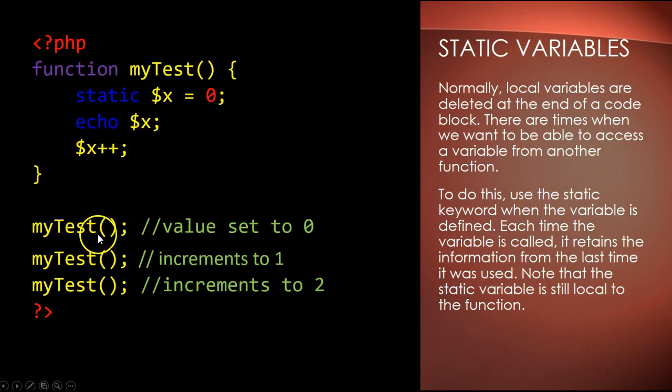With this function, each time it's called, it's going to call the most current value that that variable held. Then the next time it will increment it to one, then the second time it increments it to two.